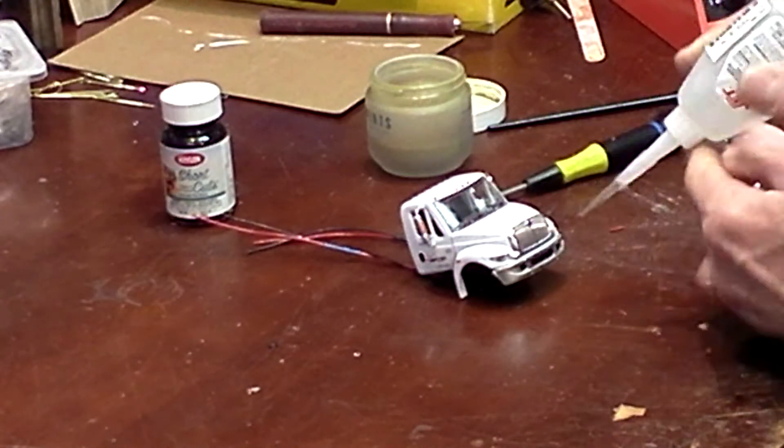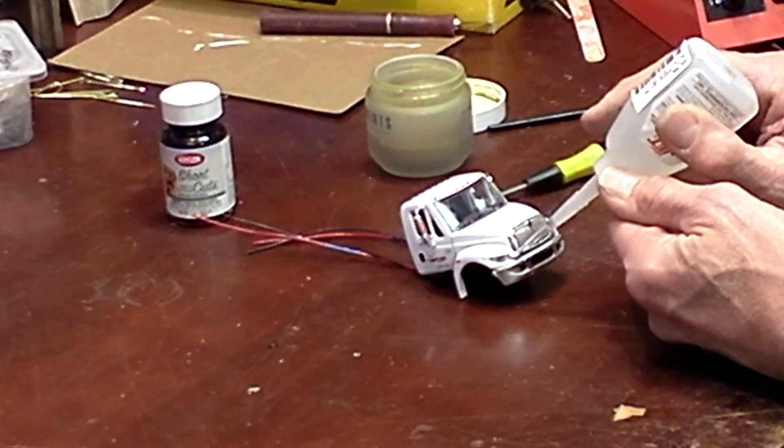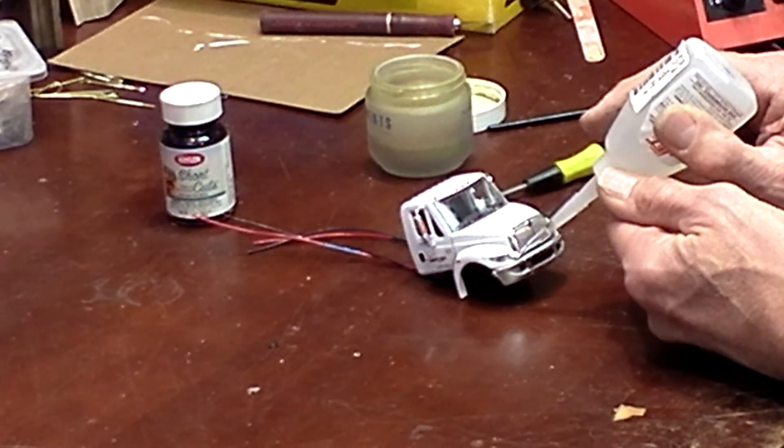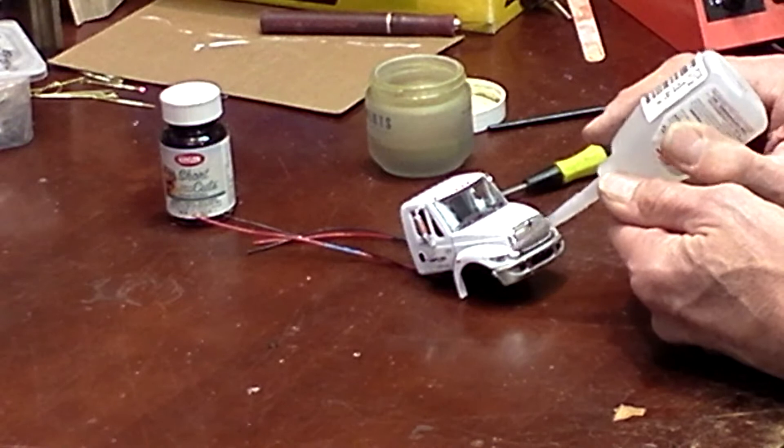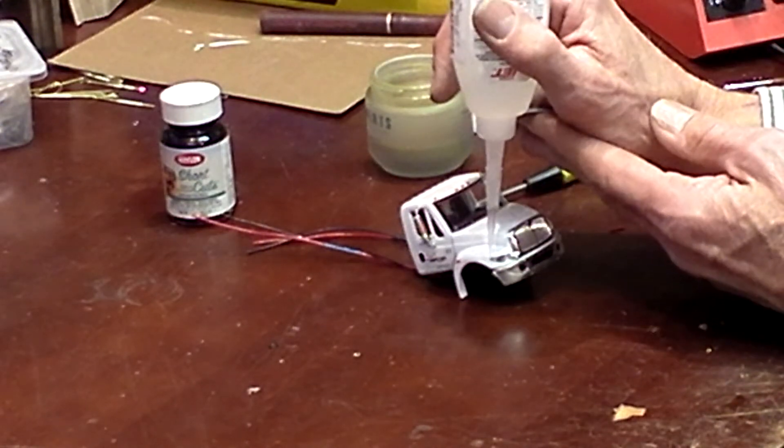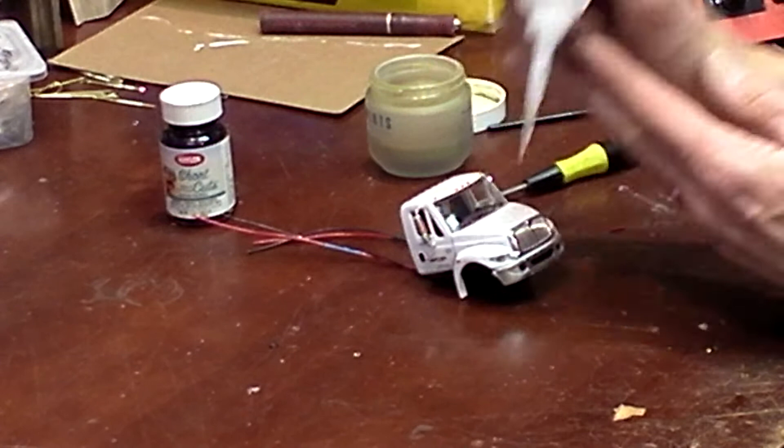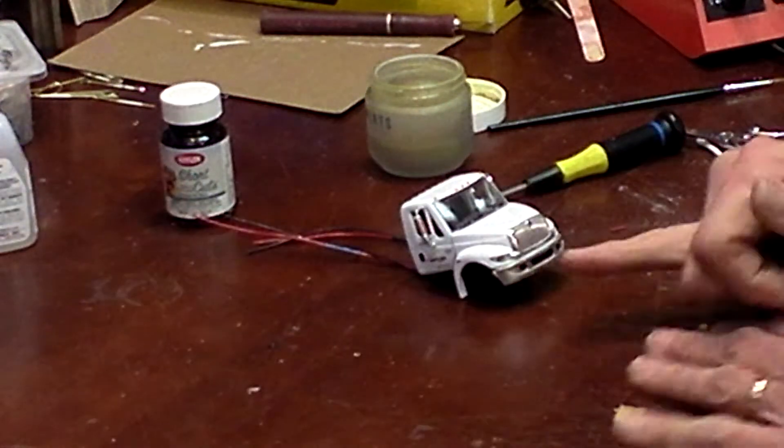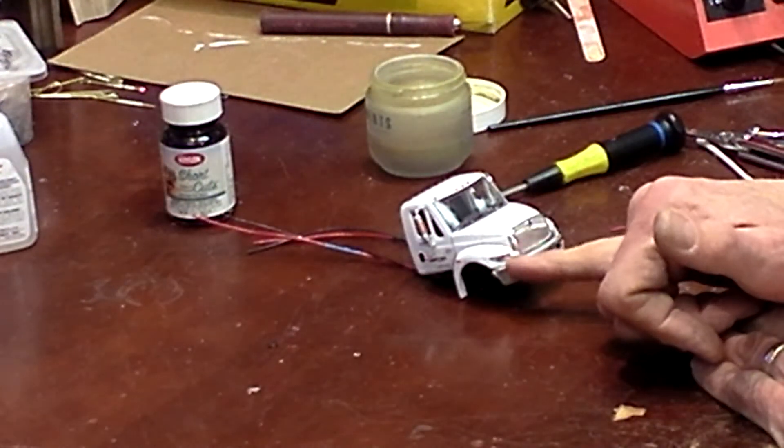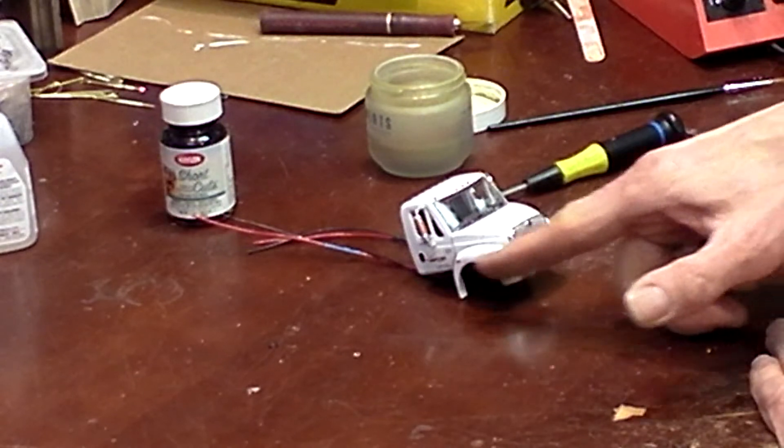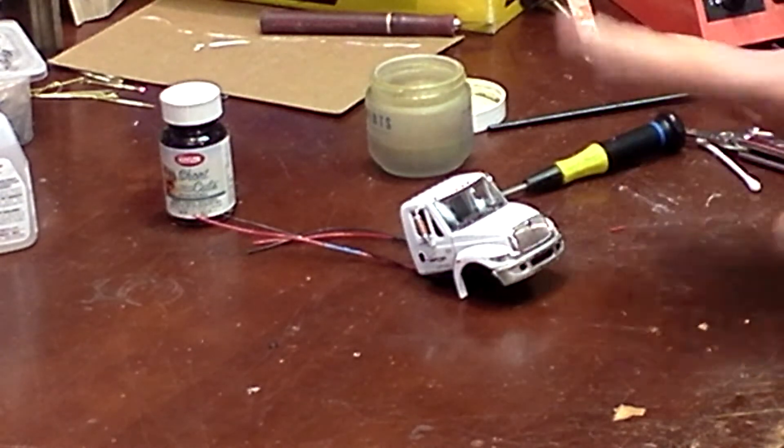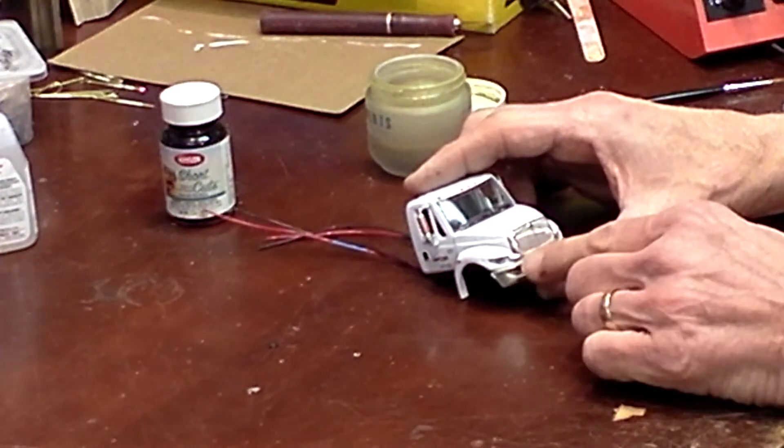Take my superglue and just catch the corner and catch the corner in the back here. Now capillary action is going to pull all that superglue in and just fill in enough that it'll hold the headlight lens on.